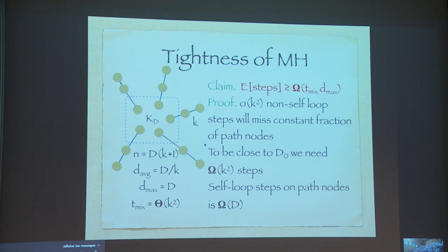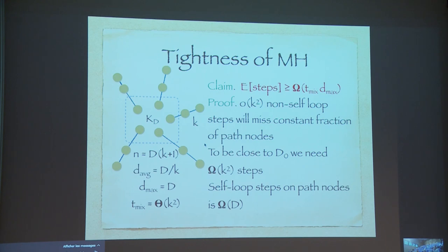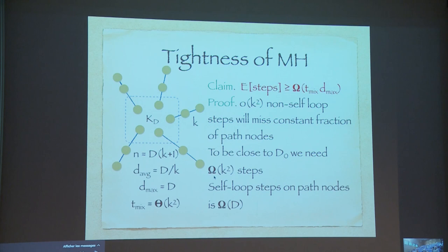This bound is worse than rejection sampling, since maximum degree can be substantially larger than average degree in power-law graphs. Moreover, this bound is tight — not an artifact of analysis. You can construct graphs where the expected number of steps for Metropolis-Hastings is Ω(t_mix × d_max). The construction: put a clique of degree d in the center of the graph, and attach long paths of length k from every node. The mixing time of the path is k², and working out the probabilities for MH gives exactly t_mix × d_max as a lower bound.